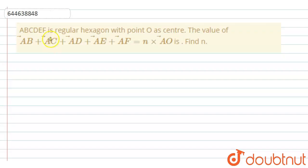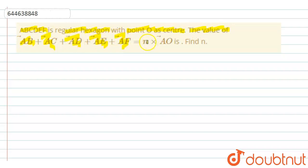The given question is: ABCDEF is a regular hexagon with point O as the center. We have to find the value of AB vector plus AC vector plus AD vector plus AE vector plus AF vector, which is given as N times of AO vector. So we have to find the value of N.